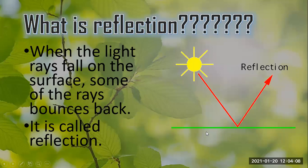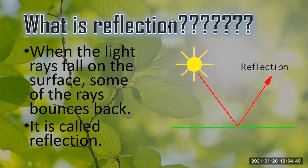It is like action and reaction — when we throw a ball toward a wall, it comes back to us. Likewise, when light rays fall on some surfaces they bounce back because the surface does not allow the light rays to pass through. This bouncing back of light is known as reflection of light.